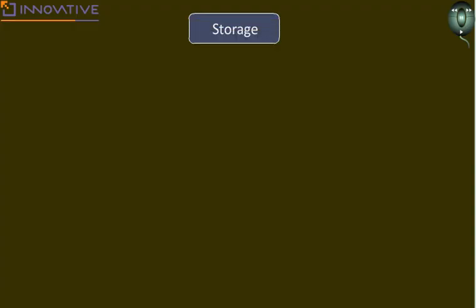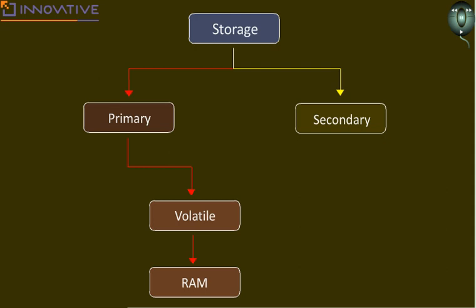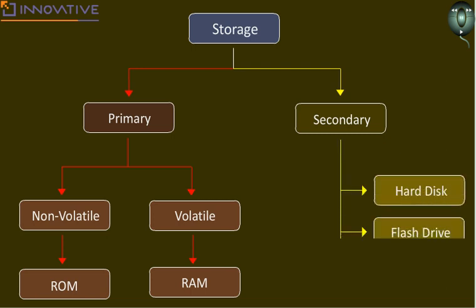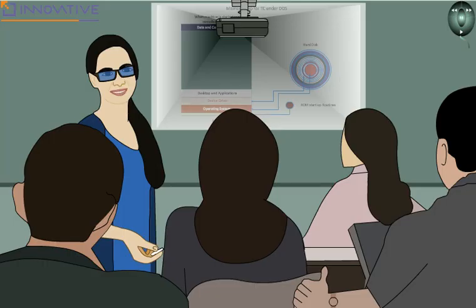Storage is basically divided into two categories: primary storage and secondary storage. Primary storage is volatile memory and therefore temporary in nature — an exception is read-only memory. Secondary storage, on the contrary, is of permanent type. Primary storage is provided by the RAM.